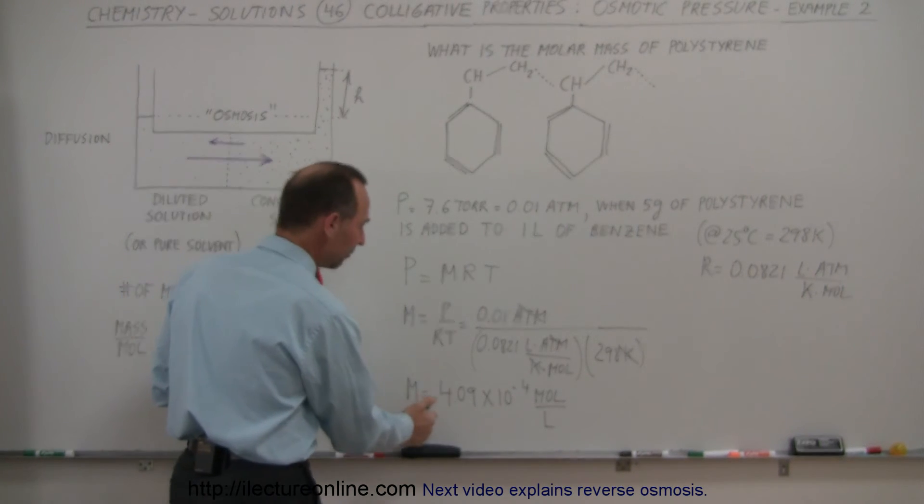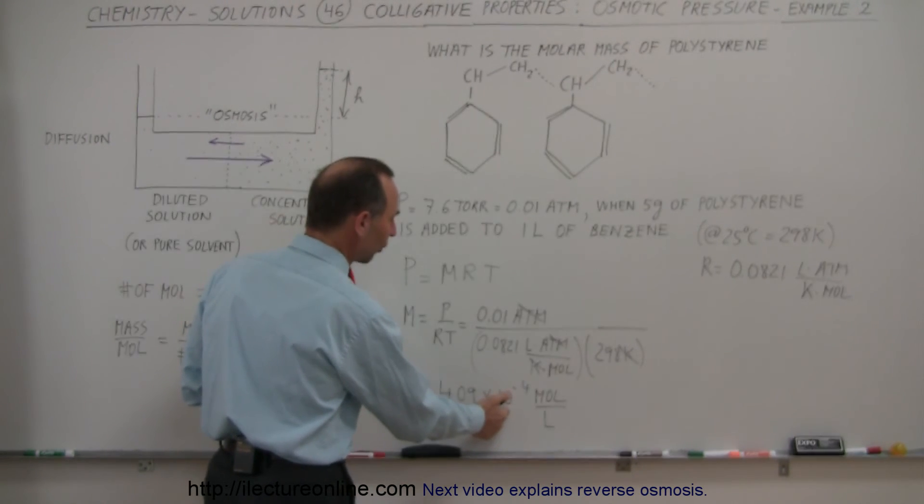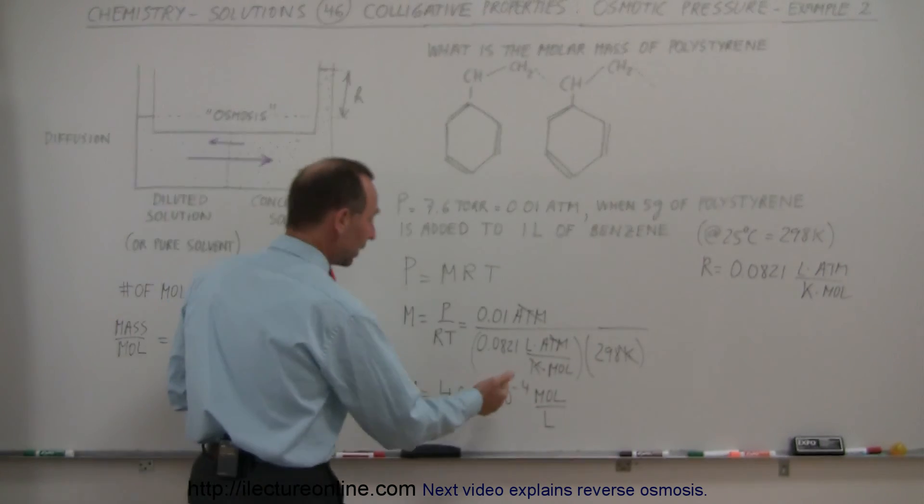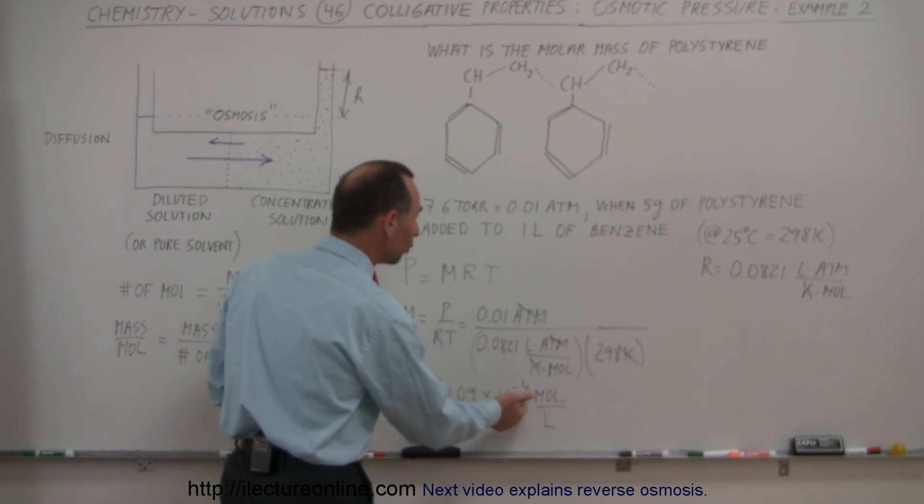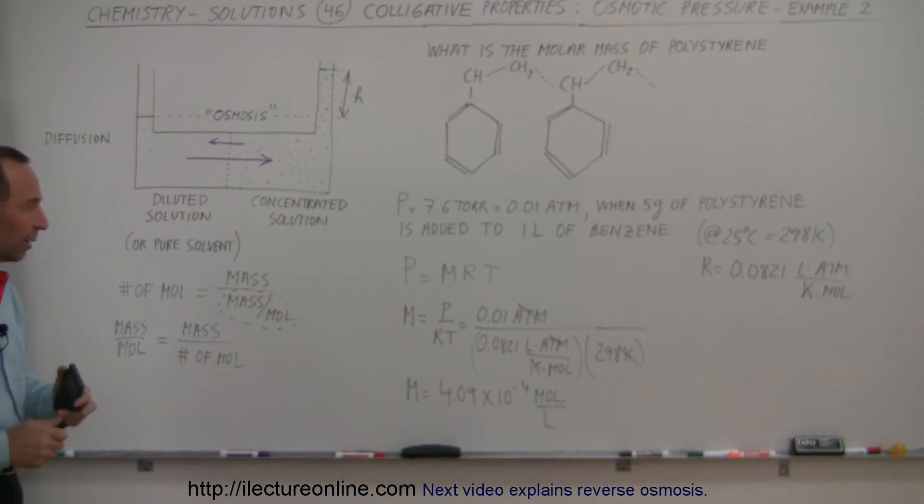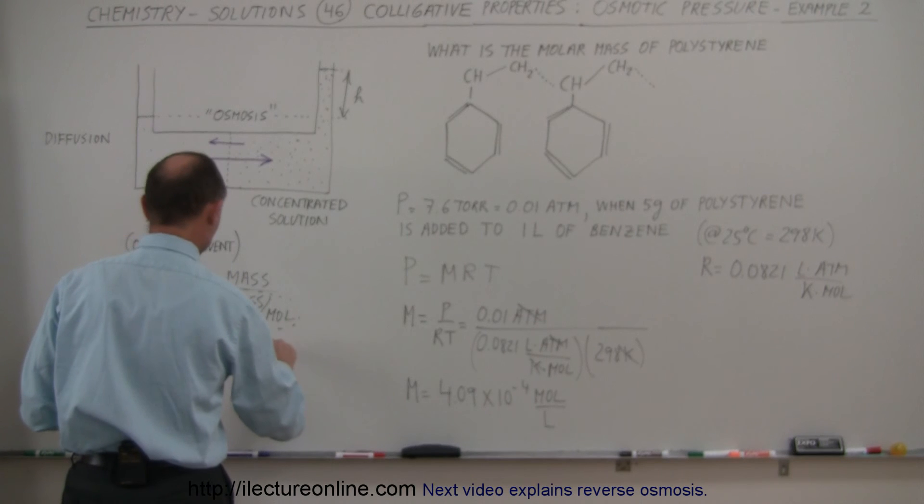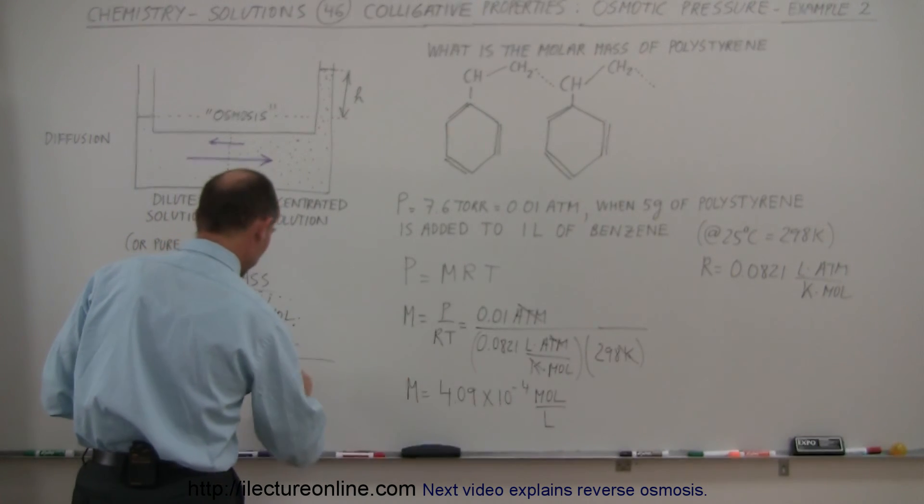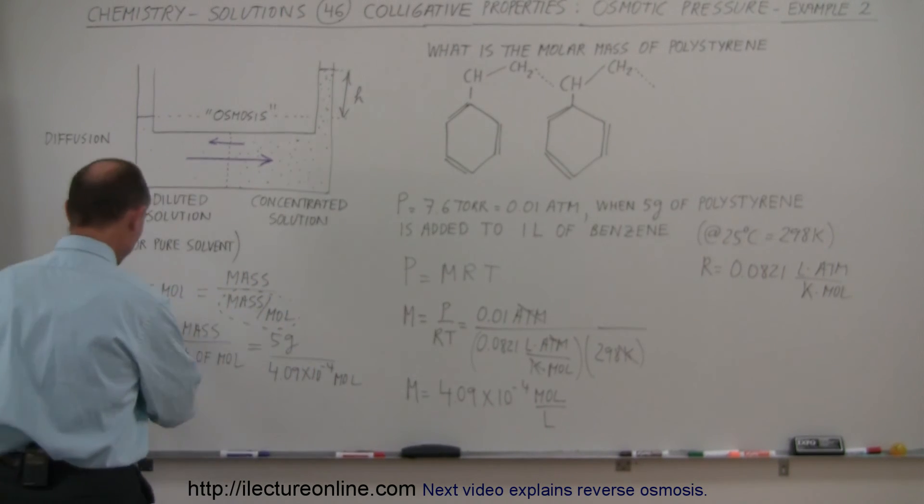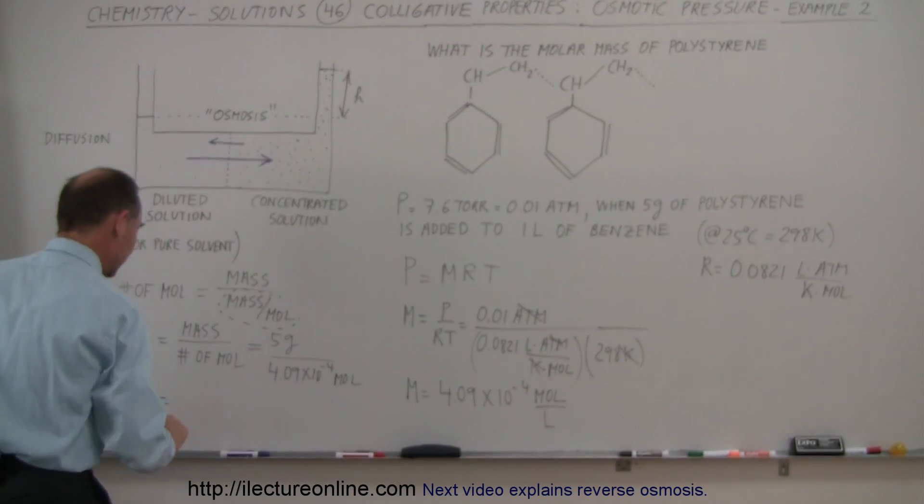Okay, so, notice, since this is the molarity, 4.09 times 10 to minus 4 moles per liter, since we have 1 liter of the sample, then we, that means that we have this many moles of polystyrene. So, that will go over here, the number of moles is that number right there. The mass is giving us 5 grams, and so we can then write this as, this is equal to 5 grams divided by the number of moles that we have, which is 4.09 times 10 to the minus 4 moles, and notice that the mass per mole will be grams per mole, that's the unit that we need.